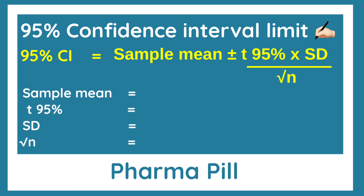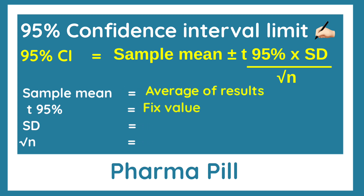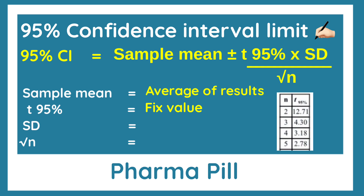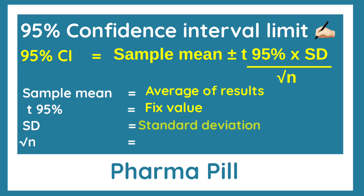Let us see the meaning of each component. Sample mean: we take the average of the results. T95% is a fixed value and can be taken from this table. For example, if we are using three sample preparations, then T95% will be taken as 4.30. Likewise, if we are taking five preparations during retesting, then T95% will be 2.78.